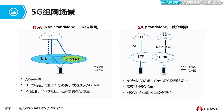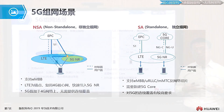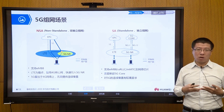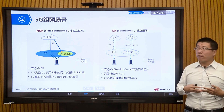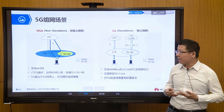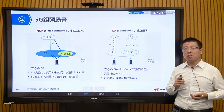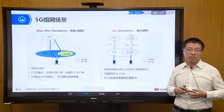The 5G network is defined in the protocol. At the beginning of 3GPP Release 15 standardization, we divided networking methods into two types. One is non-standalone networking, and the other is standalone networking. We call non-standalone networking NSA. In NSA, our 5G network is dependent on the 4G network, and they are tightly coupled.